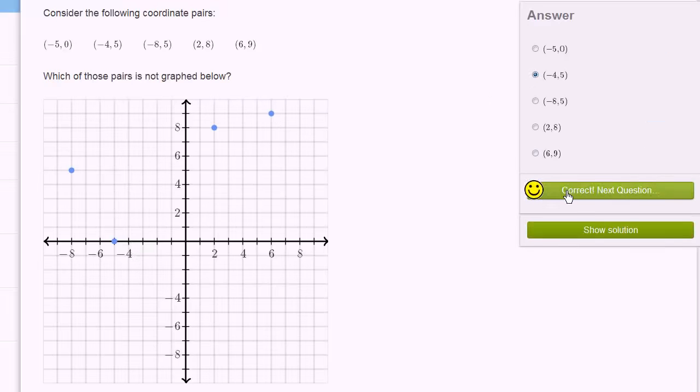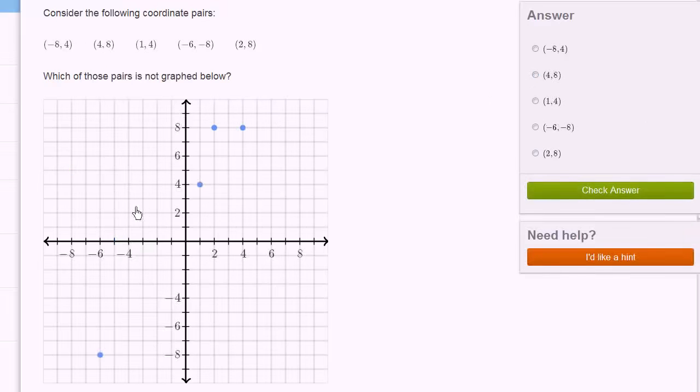Let's do one more of these. Negative 8, 4. So negative 8, 4. We got lucky, the first one is not graphed. Negative 8, 4. And we're done.